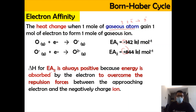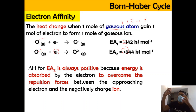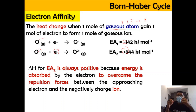We can say that delta H for EA2 is always positive. This is because energy is absorbed by the electron to overcome the repulsion between the approaching electron and the negatively charged ion. At first, the addition of an electron into the neutral atom is favorable. However, when the negative ion receives another negatively charged electron, it is not favorable. Extra energy is needed to attract the electron to come to the oxygen negative ion — this requires energy because it is negative against negative, causing repulsion.